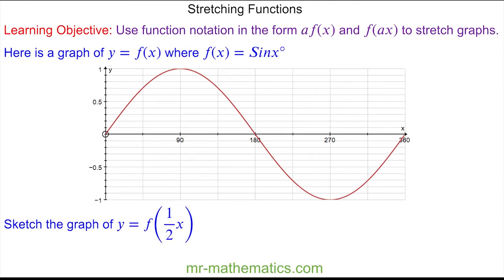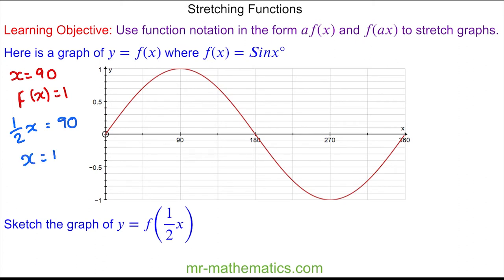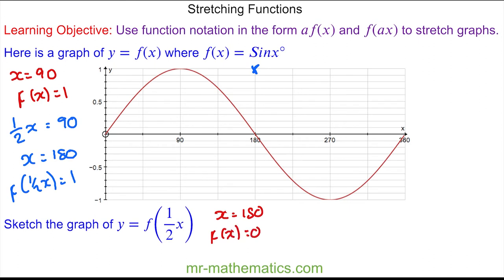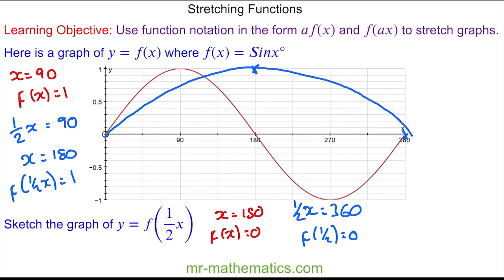Now we have f of one-half x. For f of one-half x, again we'll look at what's happening along the x-axis. When x is equal to 90, f of x is equal to 1. But when one-half of x equals 90, we have x equal to 180. So f of one-half x will equal 1 at 180 degrees, which is here. Where x is equal to 180, f of x is equal to 0, so f of one-half x will equal 0 at 360 degrees, which is here. So you can see we have half a curve compared to f of x.